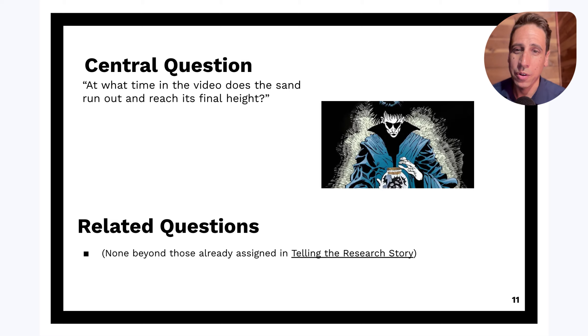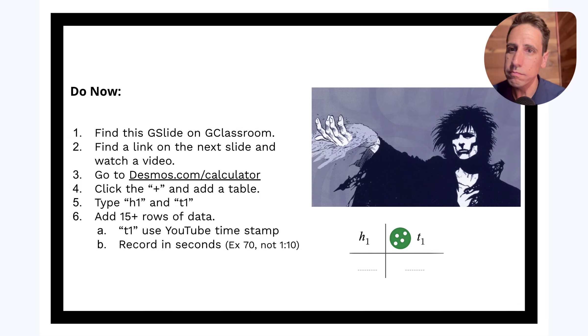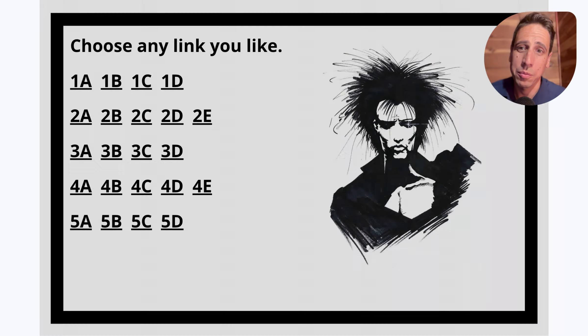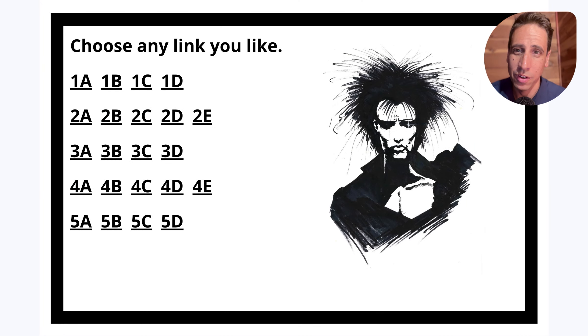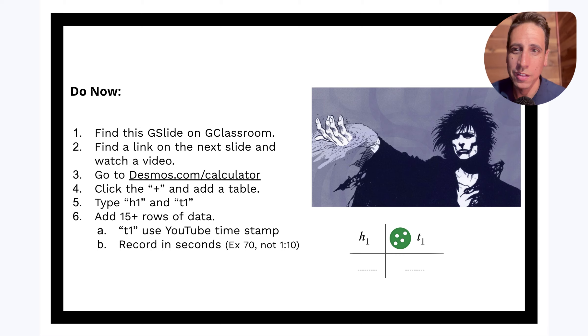So one last thing before I turn you loose on the task is that I want you to know that there's actually no related questions beyond those that are already assigned in telling the research story. So if you're telling the research story and you're following the rubric, you don't need to worry about any other related questions that are not already assigned there. So here's what I want you to do. I want you to find this Google slide on Google Classroom. I want you to find a link. So once you pull this up, you'll go to the very last slide, which is here, and I want you to choose any of these links. They all go to different data, and each of these has its own answer. And I want you to pick one and watch the video.